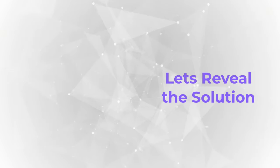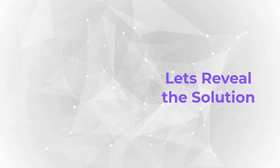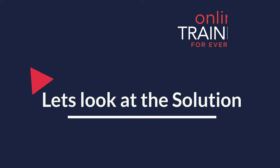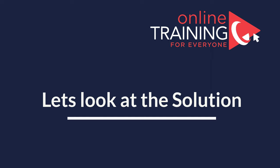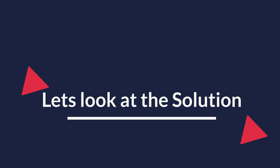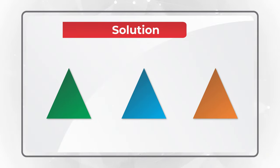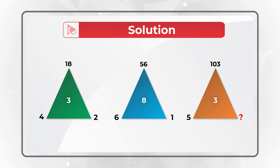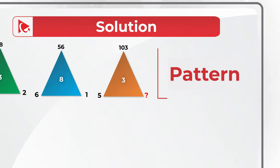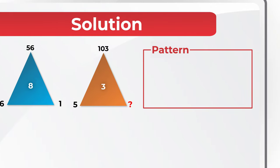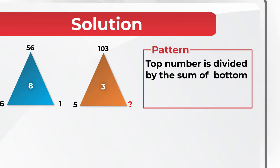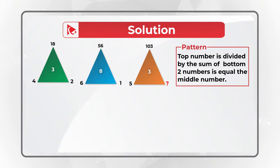The solution is very obvious but I'd like you to try to get to it on your own. I am moving forward to reveal the solution. If you have any suggestions on how to solve these types of challenges faster, please share in comments. The pattern here is that the top number divided by the sum of the bottom two numbers on the outside of the triangle equals the middle number inside the triangle.